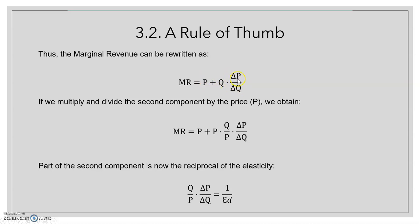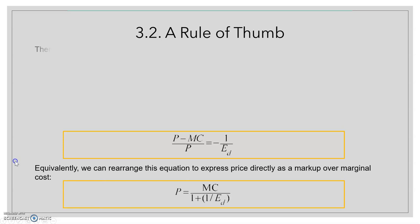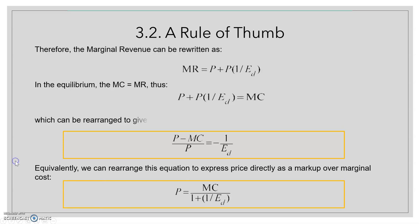This second component is negative. If we multiply and divide it by the price, we can identify the reciprocal of the price elasticity of demand. So the marginal revenue can be written as p plus p multiplied by one divided by the elasticity of demand.